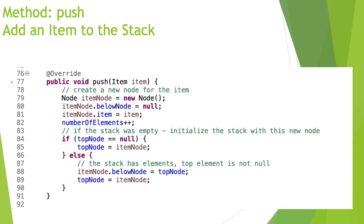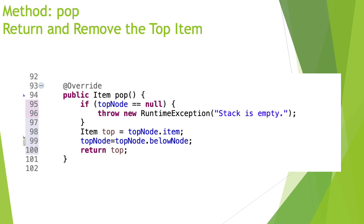For the pop method, which returns and removes the top item, we may still get an error if the stack is empty. We check if it's empty and if so return an error: stack is empty. If not empty, we save the item from the top node, then set the new top node to the node that was below the previous top. After updating the stack pointer, we return the saved top item.